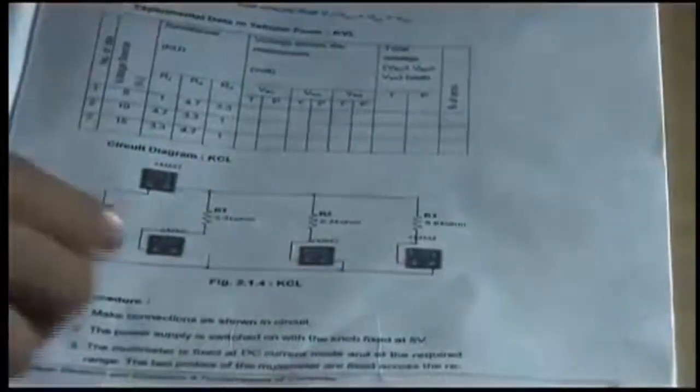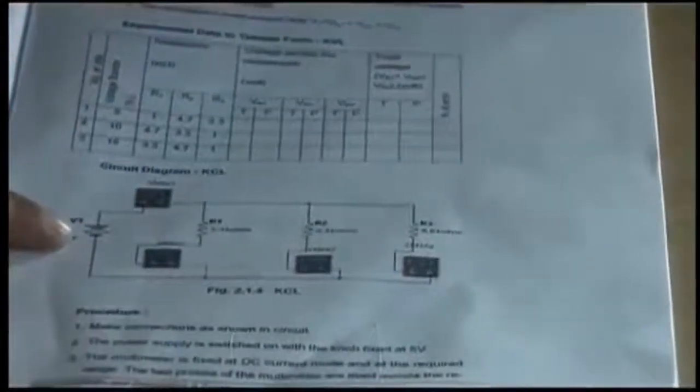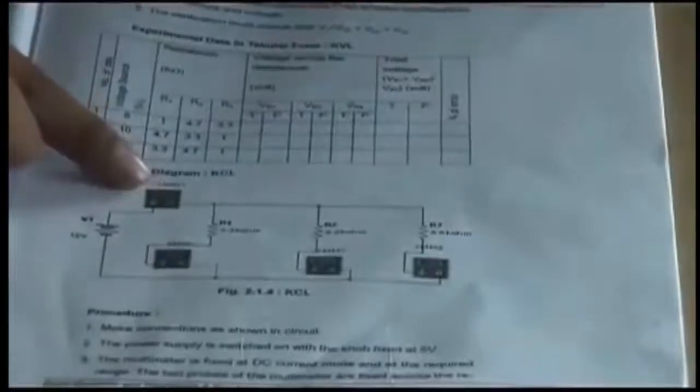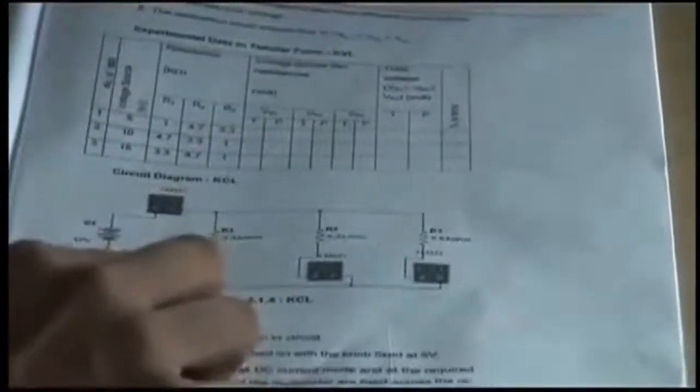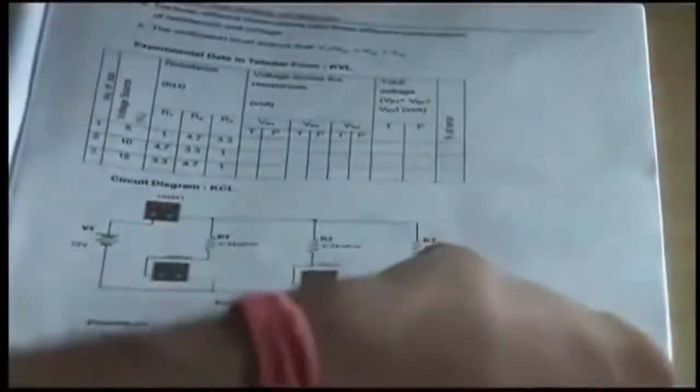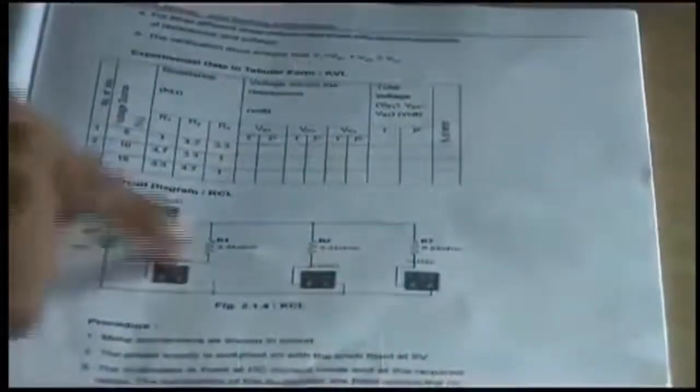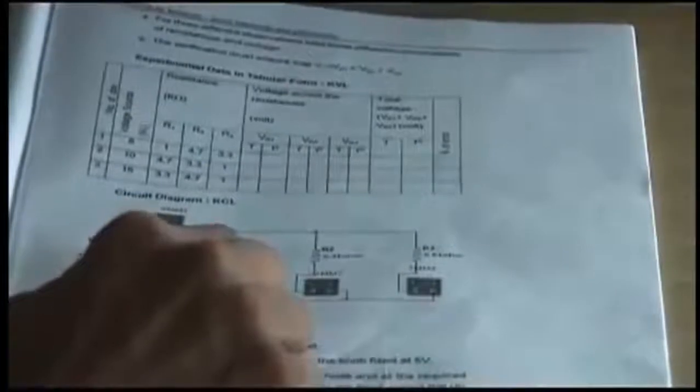This is the circuit diagram we have in the KCL. Here you can see we have power supply, one multimeter which is used as an ammeter, another multimeter used as an ammeter, again one more multimeter and one more multimeter. We have resistances R1, R2, R3 of values 3.3 kOhm, 2.2 kOhm and 5.6 kOhm. This is the circuit diagram to verify the current law.